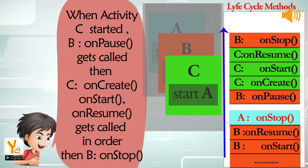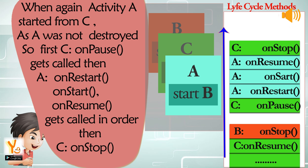When activity C is started, B's onPause gets called, then C's onCreate, onStart, onResume get called in order, then B's onStop. When C starts activity A, C's onPause gets called, then C's onStop.